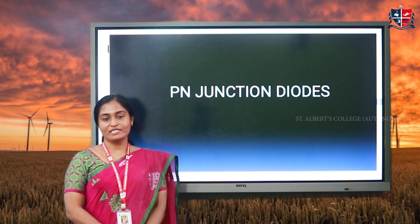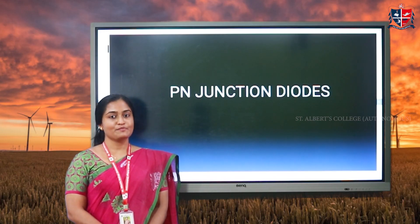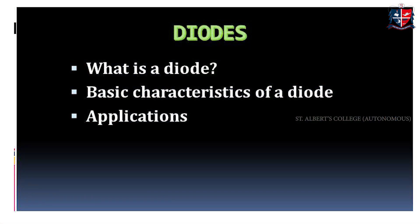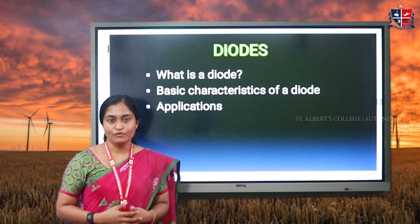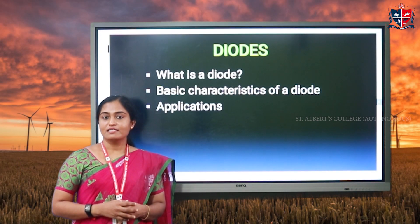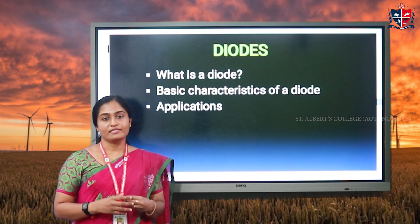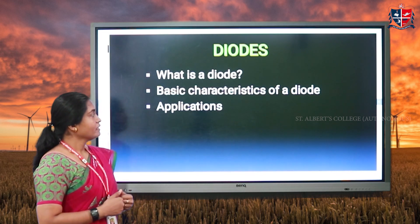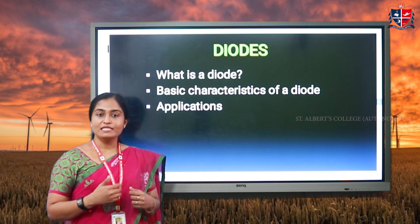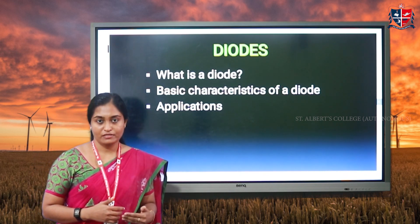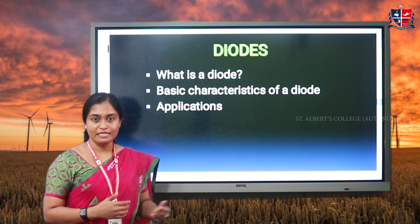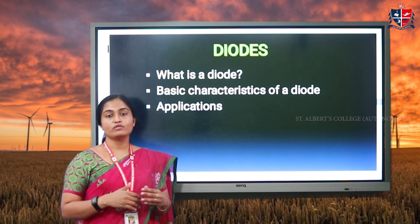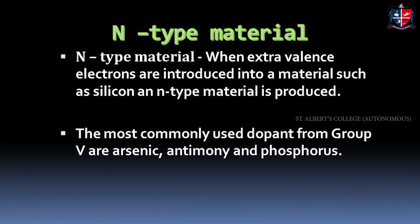Welcome to the basic electronic lecture series. In this video, I will explain diodes — PN junction diodes. A diode is a semiconductor device and it has two types of semiconductors: a P-type semiconductor material and an N-type. We will see the basic voltage-current characteristics of a diode, some of the applications of the diode, and also some of the special purpose diodes.